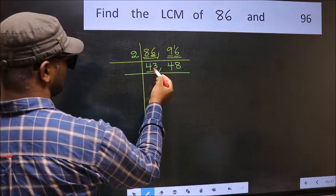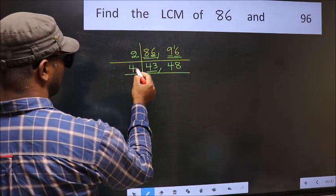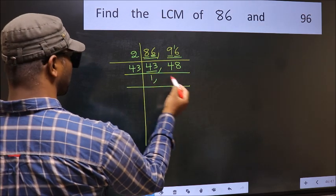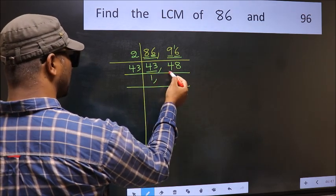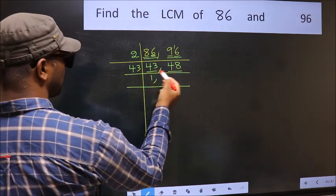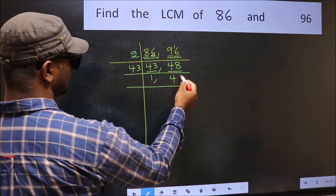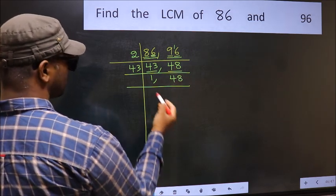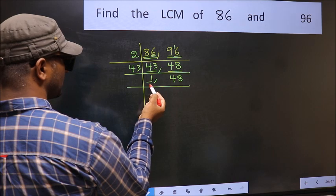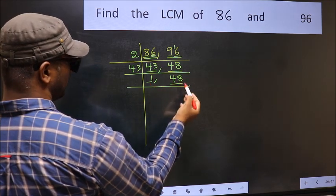Now we have 43 here. 43 is a prime number, so 43 times 1 is 43. The other number 48 is not divisible by 43, so we write it down as it is. Now we get 1 here, so focus on the next number, 48.